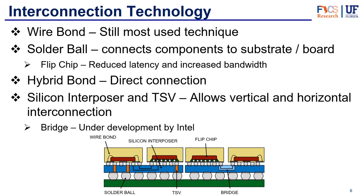They can connect chips horizontally, and sometimes we also have the active interposer, which can have some functionality of its own. Something similar that Intel has been looking into to avoid a full silicon layer would be bridges — they have their EMIB technology — which basically uses a little pocket of silicon within an organic substrate to make just the connection needed in that local area, instead of having the full layer be silicon like in the case of the interposer.